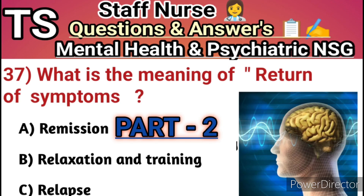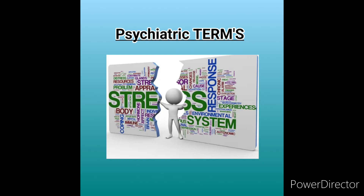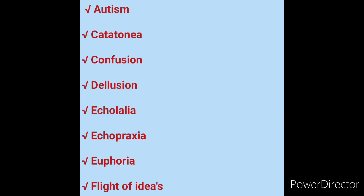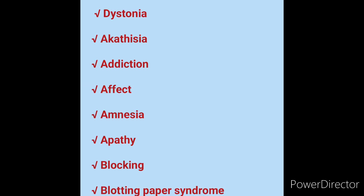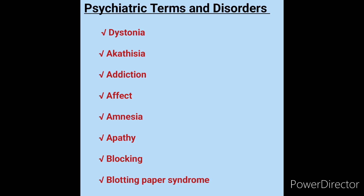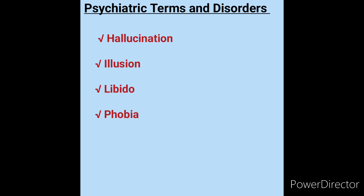Before the FAQ discussion, we will discuss some psychiatric terms related to psychiatric nursing. The terms we will cover are: autism, catatonia, confusion, delusion, echolalia, echopraxia, euphoria, flight of ideas, dystonia, akathisia, addiction, affect, amnesia, apathy, blocking, blotting paper syndrome, hallucination, illusion, libido, and phobia.